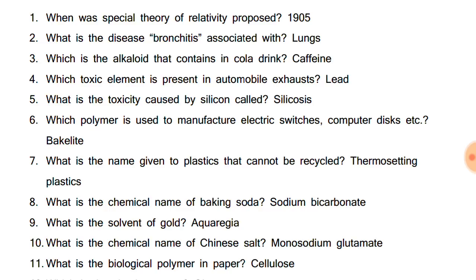Which polymer is used to manufacture electric switches, computer disks, etc.? Bakelite. What is the name given to plastic that cannot be recycled? Thermosetting plastic. Whereas the plastic that can be recycled is known as thermoplastic. What is the chemical name of baking soda? Sodium bicarbonate.